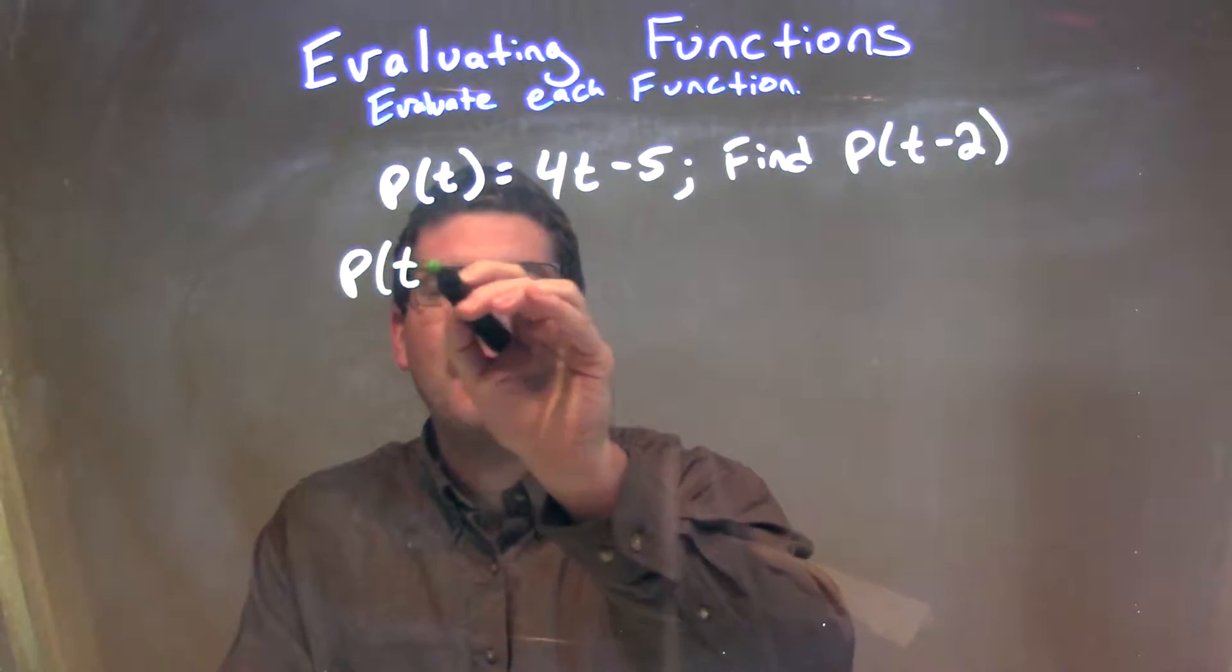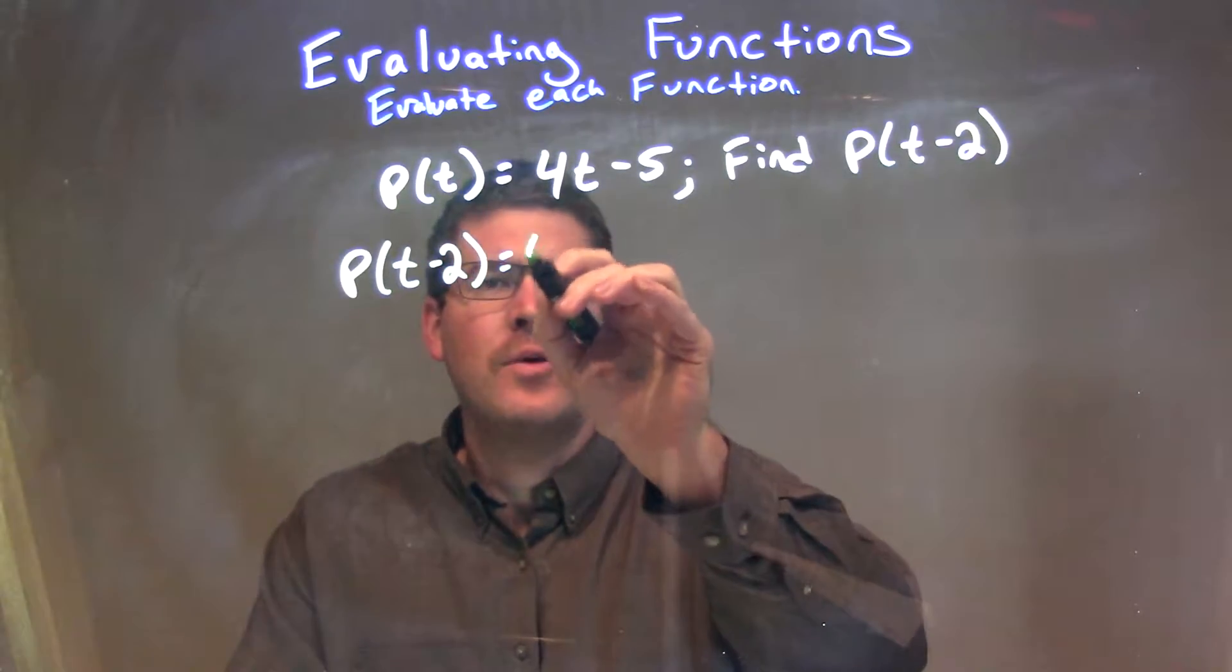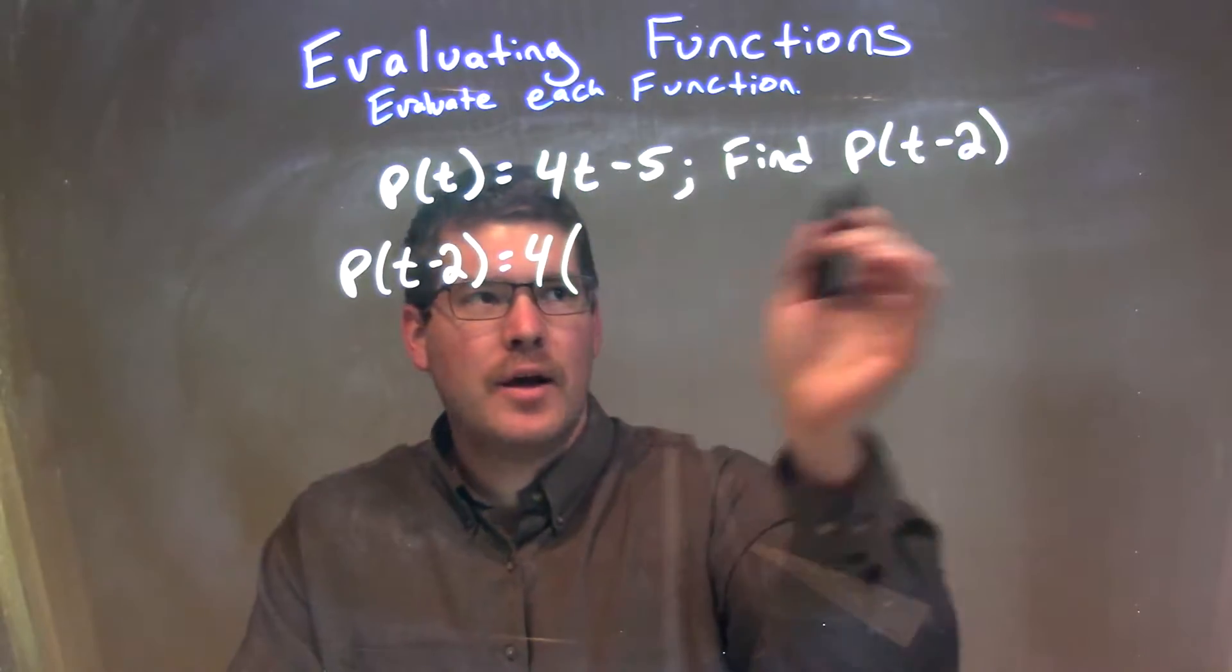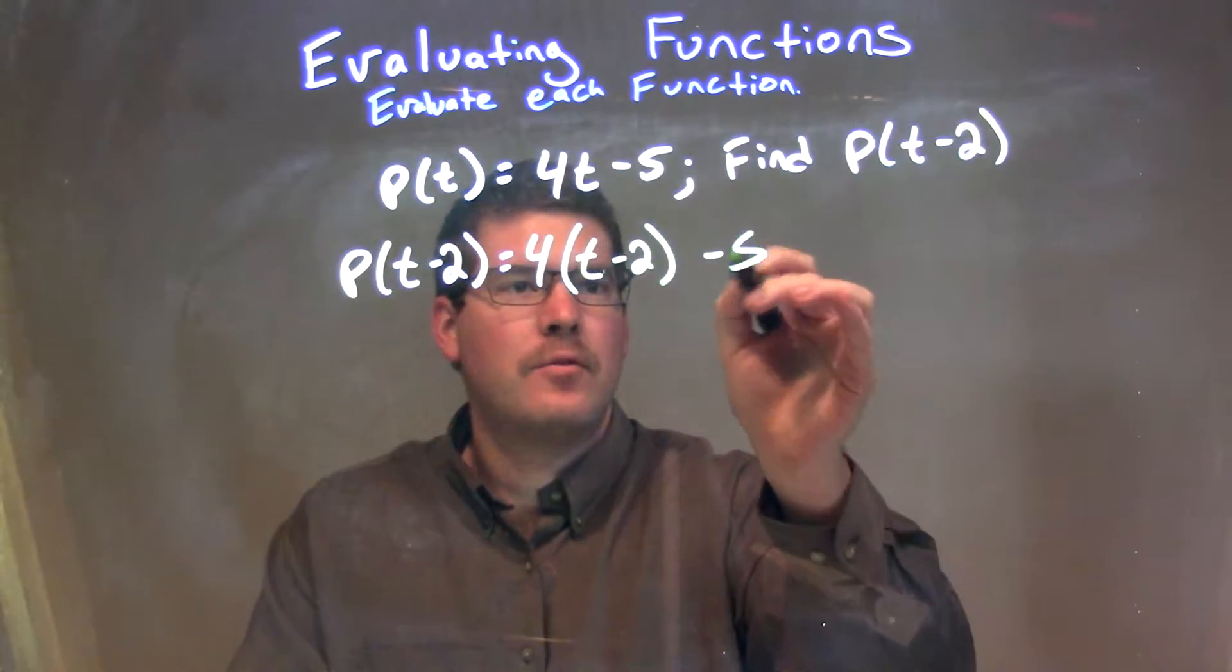So, P of t minus 2, plug in, do that in for t. We have 4 times, now we're plugging in, that's a t. Plug in t minus 2, minus 5 there.